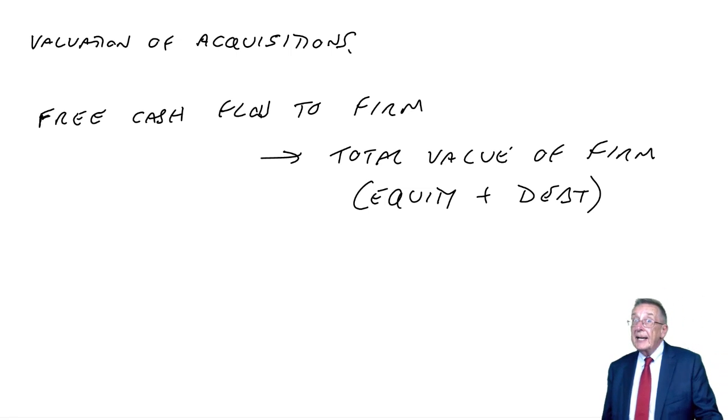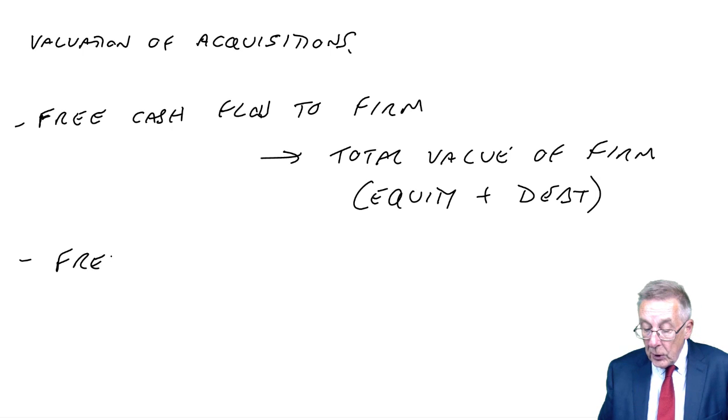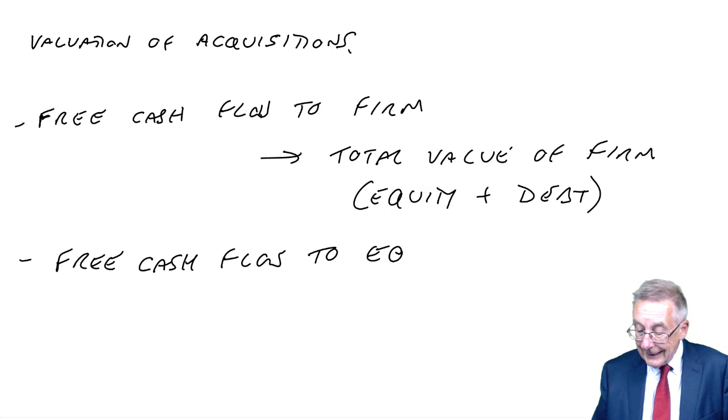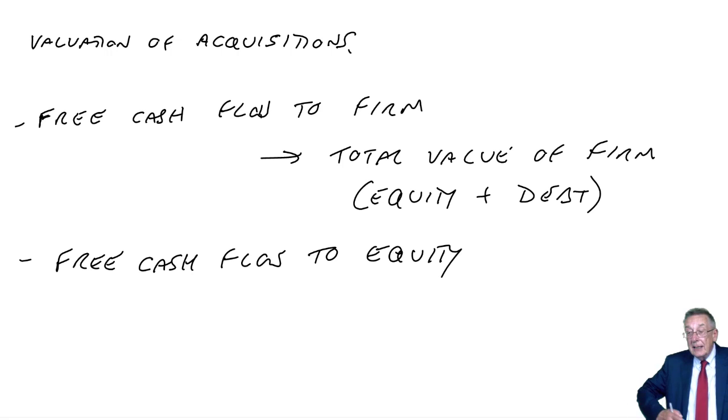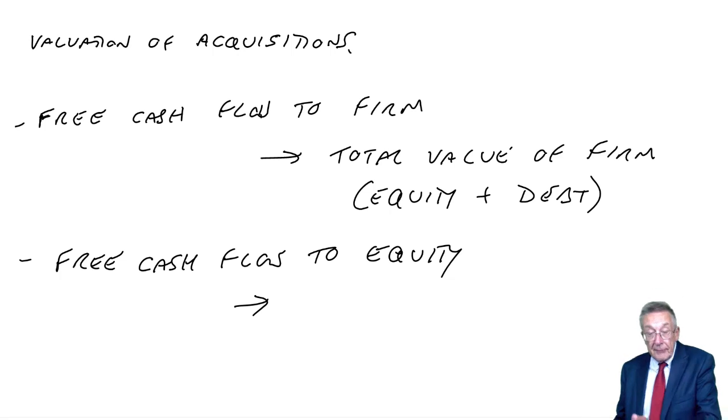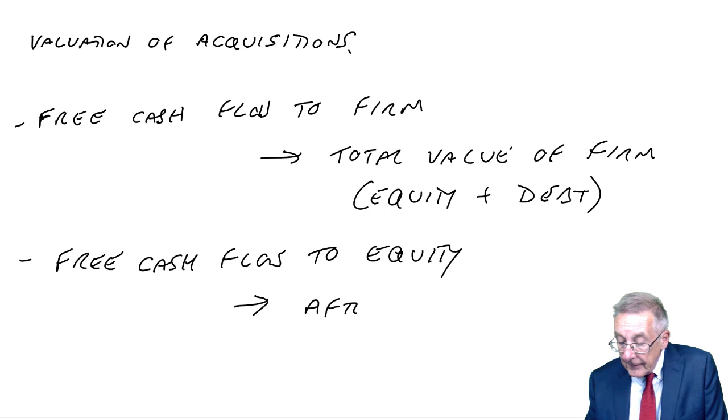The alternative, and it'll be clear from the question which one would be expected, is something called the free cash flow to equity. Why is that going to be different? Free cash flow to firm was all the money available to satisfy both the debt and the equity. Free cash flows to equity is the amount available just for the equity. So it's effectively the free cash flows again, but after subtracting interest.